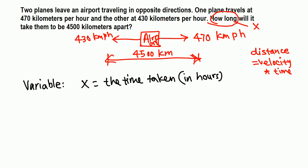So the distance traveled by this plane will be 470, that's the velocity, times time. Time is x, so 470x. Similarly, by this plane it will be 430x, and this is the distance now.